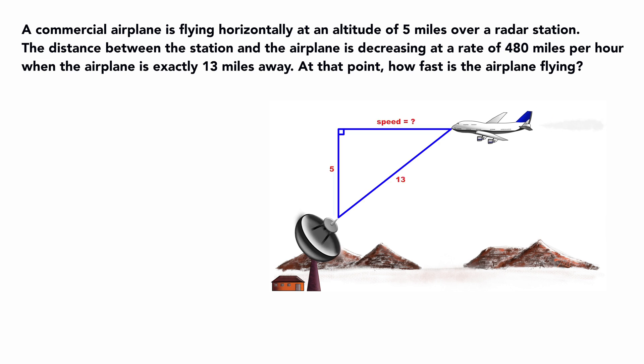A commercial airplane is flying horizontally at an altitude of 5 miles over a radar station. The distance between the station and the airplane is decreasing at a rate of 480 miles per hour when the plane is exactly 13 miles away. At that point, how fast is the airplane flying?